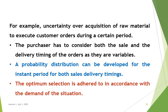For example, consider uncertainty over acquisition of raw material to execute customer orders during a certain period. The purchaser has to consider both the sales and the delivery timings of orders as their variables. A probability distribution can be developed for the instant period for both sales and delivery timings, and the optimum selection is made in accordance with the demand of the situation.